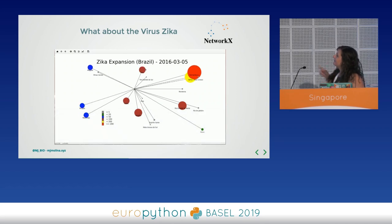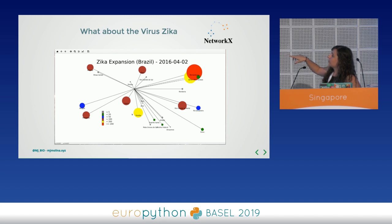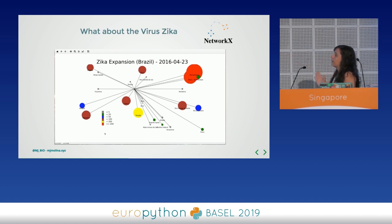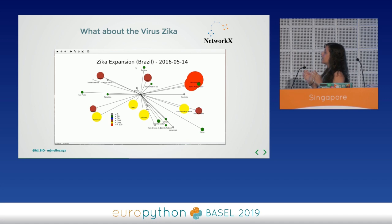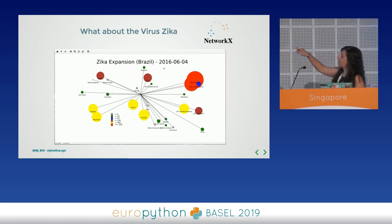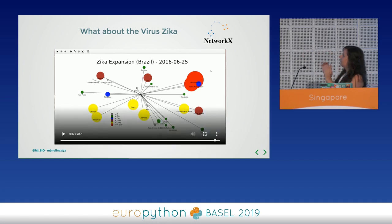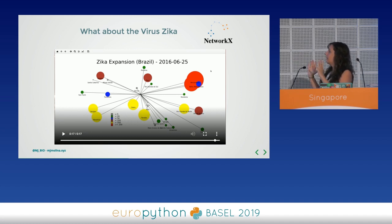These are the different cities. We have different colors that represent the amount of cases, shown in ranges. Every time cases move from one range to another, the size of the node grows and the color also changes.